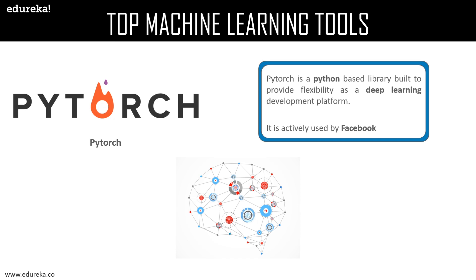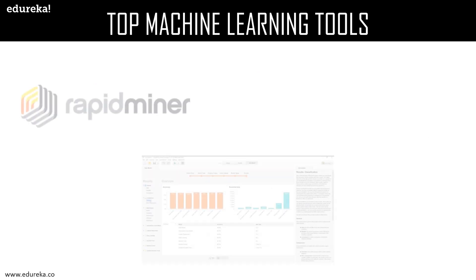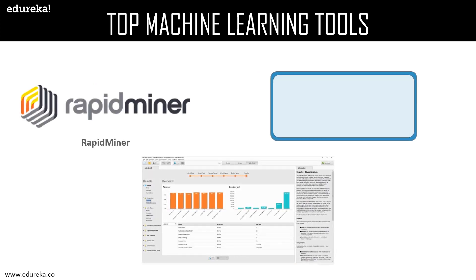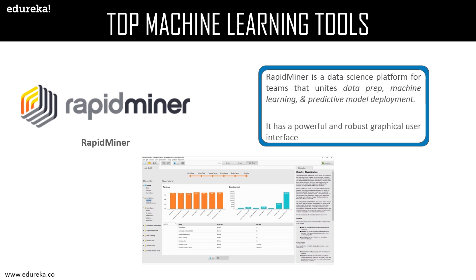Next is RapidMiner, a data science platform for teams that unites data preparation, machine learning, and predictive model deployment. It has a powerful and robust graphical user interface that enables users to create, deliver, and maintain predictive analytics. With RapidMiner, uncluttered, disorganized, and seemingly useless data becomes very valuable as it simplifies data access and lets you structure it in a way that is easy for your team to comprehend. Features include visualization through GUI and designing and implementing analytical workflows. One downside is that the tool is very costly.